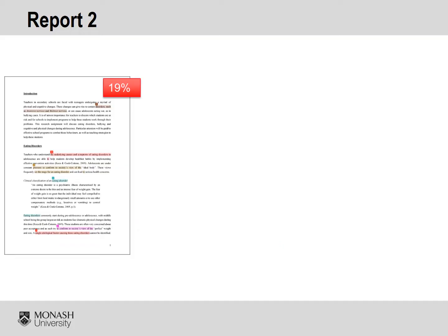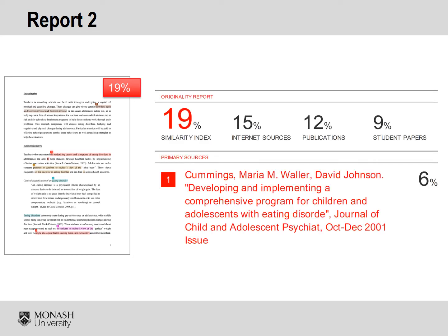The second report is an essay submitted by a third-year student for a counselling unit. The purpose of this essay was to evaluate the physical and emotional changes experienced by adolescents, as well as potential school intervention programs for these challenges. As you can see, this assignment has received a 19% similarity index from Turnitin.